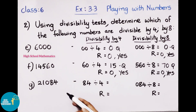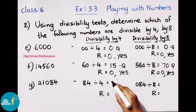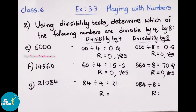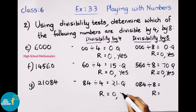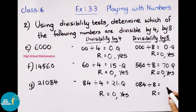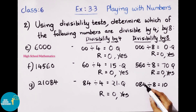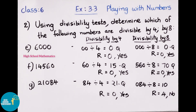Next number: 21,084. Checking divisibility by 4: last 2 digits are 84. 4 times 21 is 84, quotient is 21, remainder is 0. Yes, it is divisible by 4. Checking divisibility by 8: last 3 digits are 084. Dividing by 8 gives a remainder, so 21,084 is not divisible by 8.